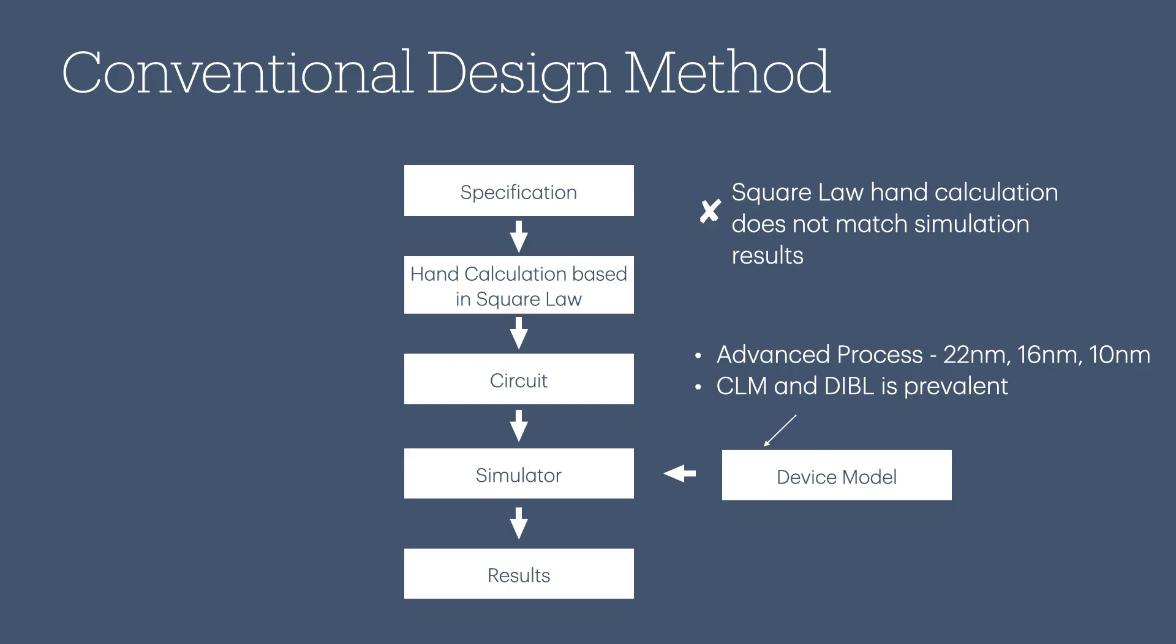The main problem is that the square law doesn't accurately reflect how devices really behave, especially with advanced process nodes like 22 nanometers, 16 nanometers, or 10 nanometers. At these tiny scales, second-order effects like channel length modulation (CLM) and drain-induced barrier lowering (DIBL) become significant. The square law can't account for those.